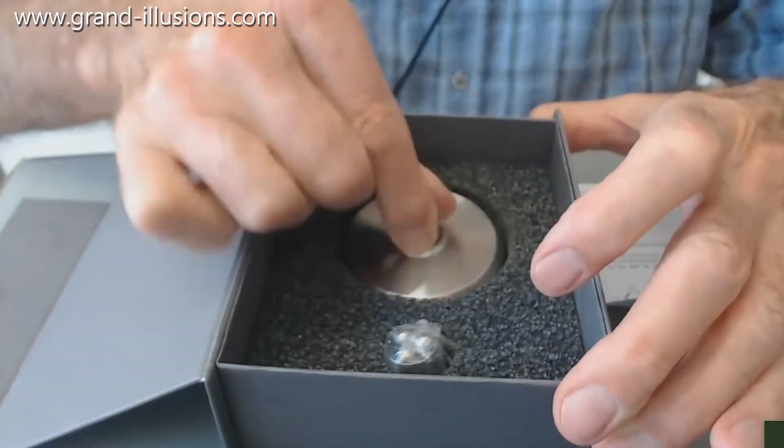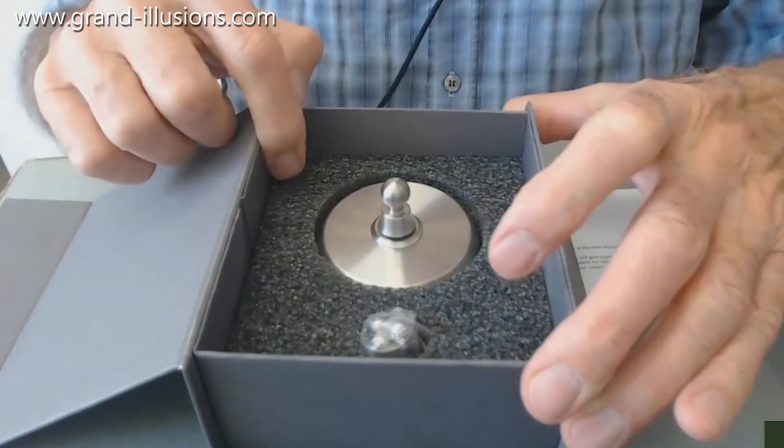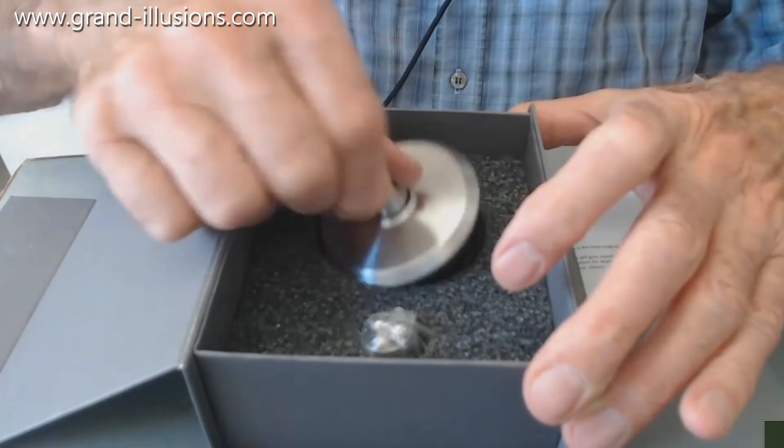There's the main gyroscope here, and this is a little thing you put it on, which is a most unusual idea because it's just three ball bearings and a little plinth.